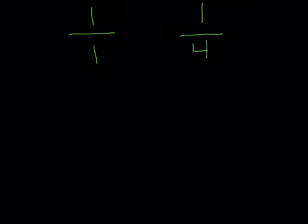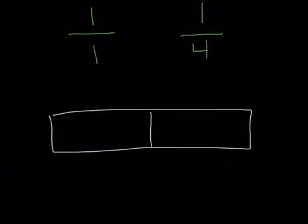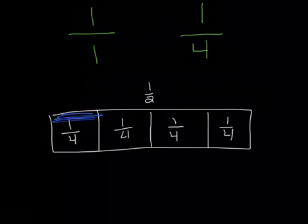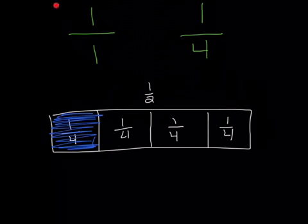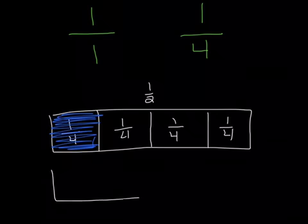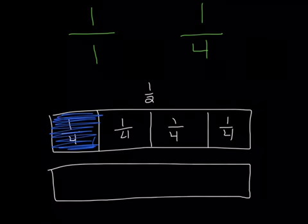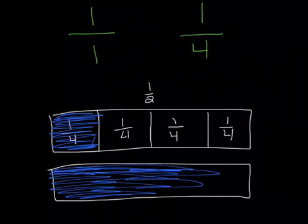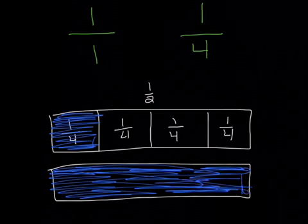Let's look at this one. This one is 1 over 1, and you're comparing it to 1 fourth. Let me draw my 1 fourth representation first. I'm going to split it in half at my benchmark, and then I need four equal pieces for 1 fourth. I'm going to shade in one fractional part. Now, how would I draw a fraction strip for 1 over 1? My denominator is 1, so I need to have one equal piece, and I'm going to shade in one of those equal pieces — I'm going to be shading in one whole. When your numerator and your denominator are the same, that stands for one whole. So in this case, 1 over 1 is greater than 1 fourth.